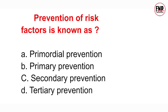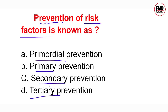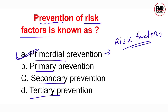Next question: Prevention of risk factors is known as — primordial, primary, secondary, or tertiary? Option A is absolutely correct. Primordial level of prevention ke andar risk factors ko prevent kiya jaata hai. Is level ka use hum tab karte hain jab client ki life mein na to kisi particular disease ki presence hoti hai na us disease se sambandhit risk factor maujood hota hai — sirf client ko educate karke healthy lifestyle follow karwa kar hum risk of disease development ko kam kar dete hain.